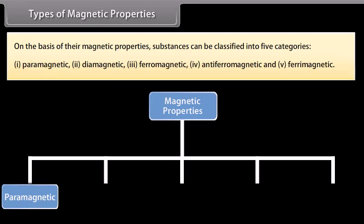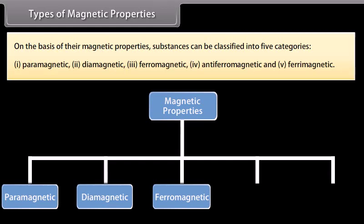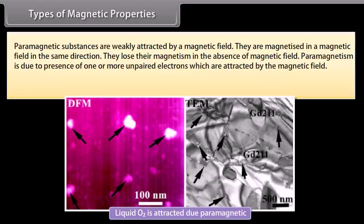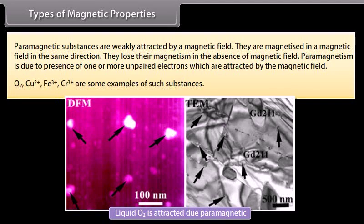Types of magnetic properties: On the basis of their magnetic properties, substances can be classified into 5 categories: paramagnetic, diamagnetic, ferromagnetic, antiferromagnetic, and ferrimagnetic. Paramagnetic substances are weakly attracted by a magnetic field. They are magnetized in a magnetic field in the same direction. They lose their magnetism in the absence of magnetic field. Paramagnetism is due to presence of one or more unpaired electrons which are attracted by the magnetic field. O2, Cu2+, Fe3+, Cr3+ are some examples of such substances.